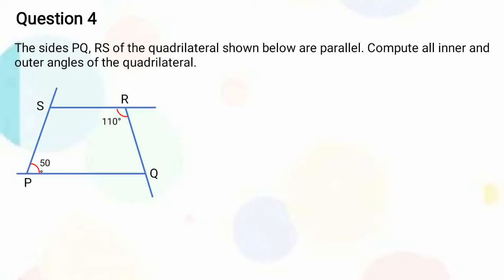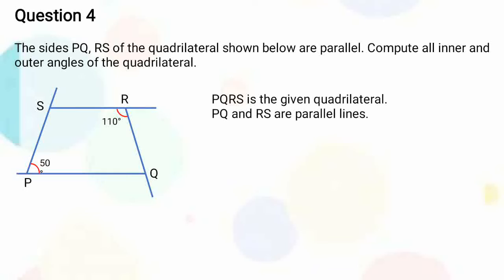The sides PQ and RS of the quadrilateral shown below are parallel. Compute all the inner and outer angles of the quadrilateral. Here PQRS is the given quadrilateral. PQ and RS are parallel lines. Given angle P is equal to 50 degrees and angle R is equal to 110 degrees. We have to compute all the other outer and inner angles.